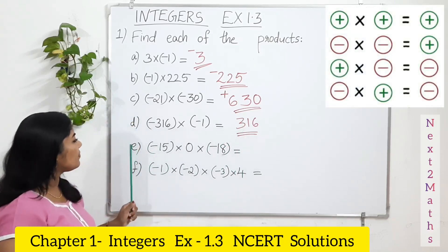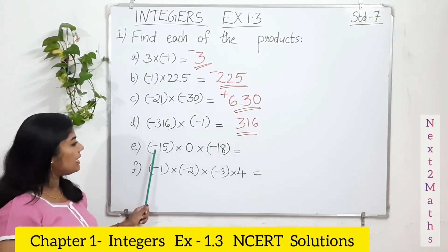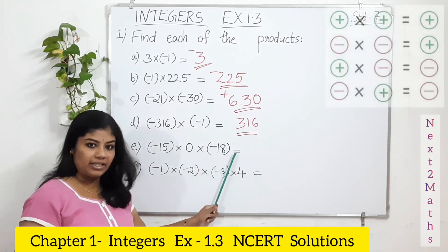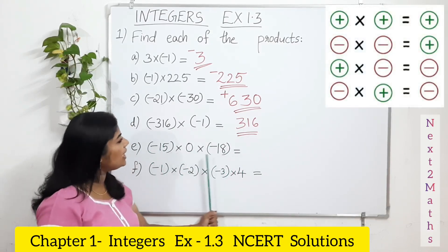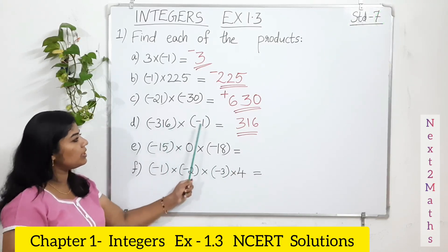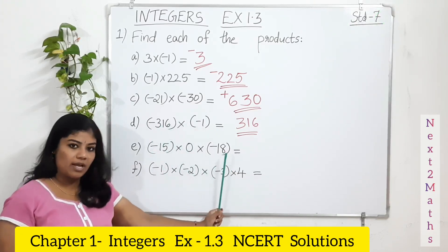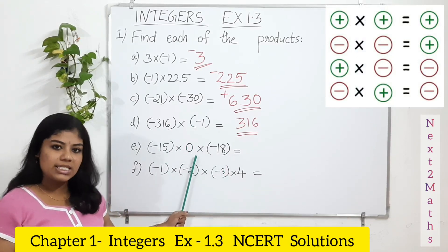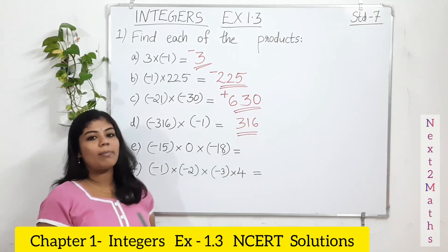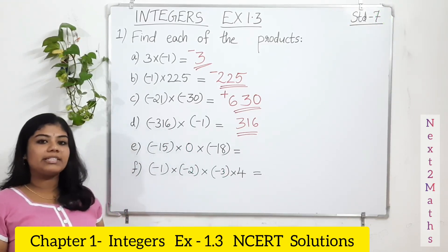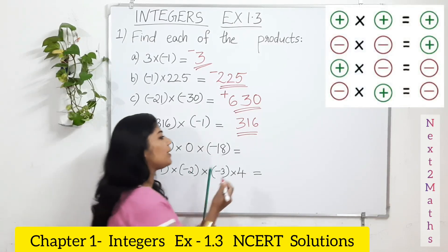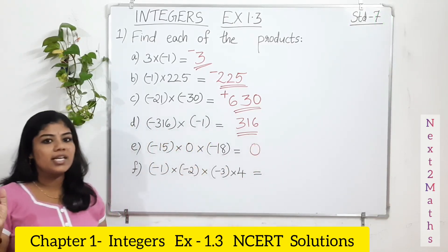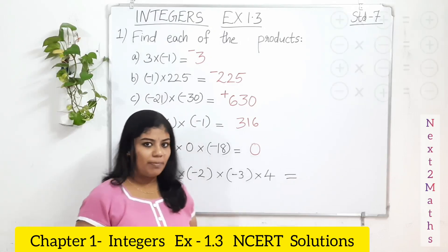Part E: negative 15, 0, negative 18 — multiply 3 numbers. Here one of them is 0. Any integer multiplied with 0 gives a product of 0. So directly your answer is 0.